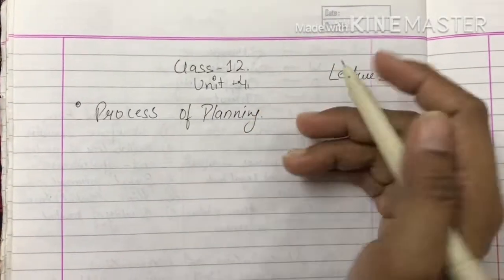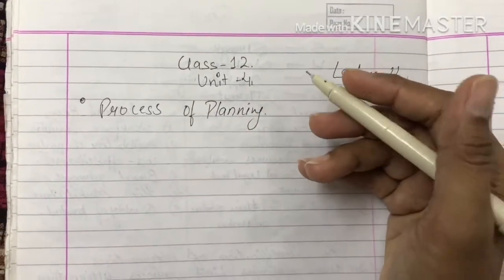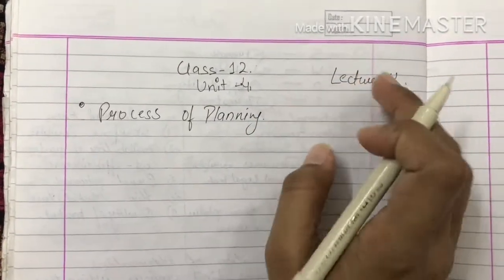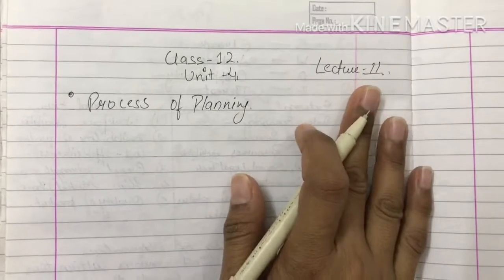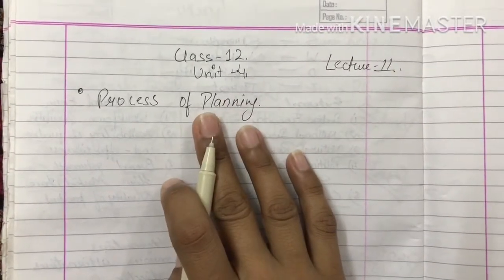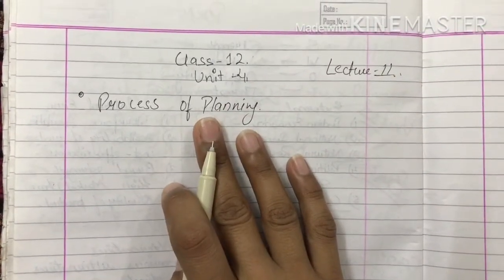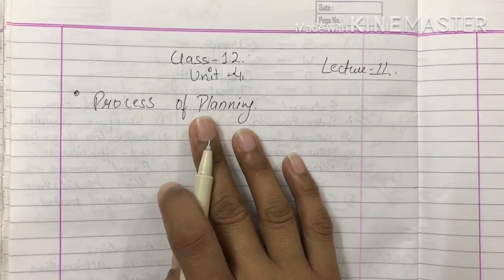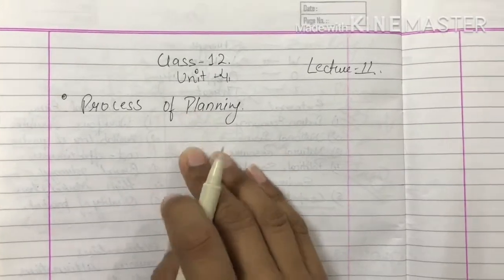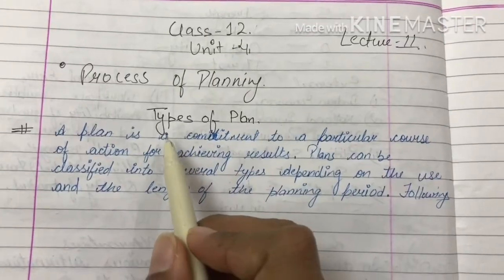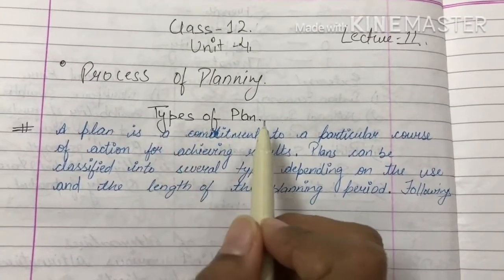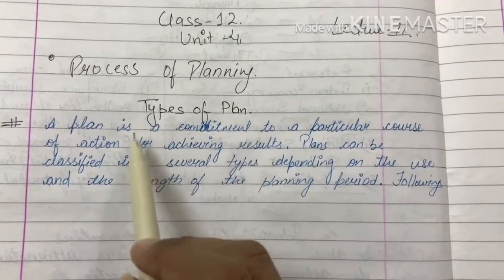Very good morning to the students of class 12. We are in Unit 4, Lecture 11, and we have already done in the last lecture the process of planning. Today we are going to start with the topic that is types of plan.